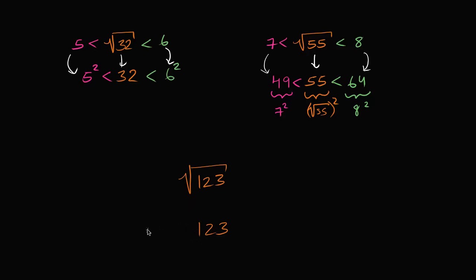So 123. So we could write 121 is less than 123, which is less than 144. That's 12 squared. So if we take the square roots, we could write that 11 is less than the square root of 123, which is less than 144.